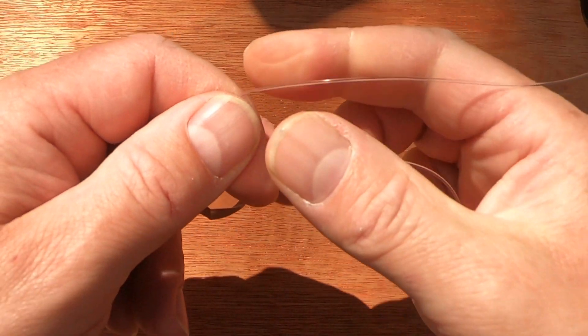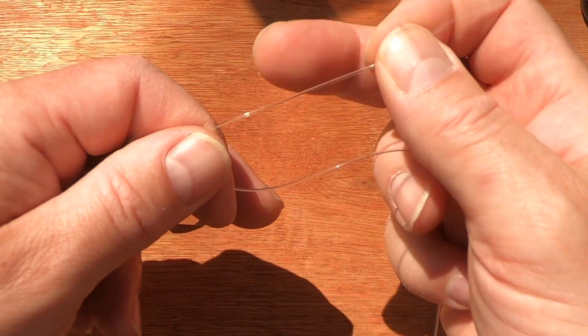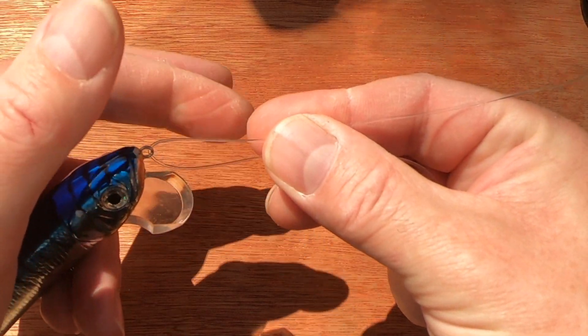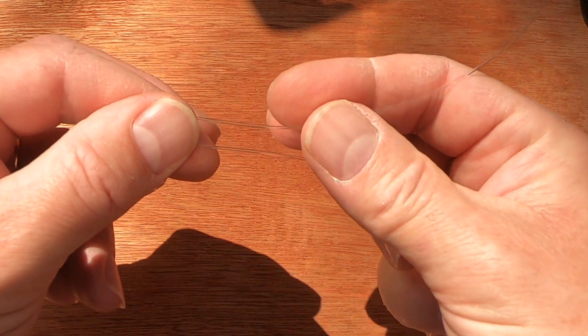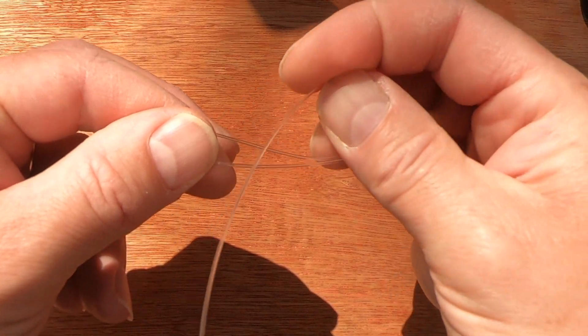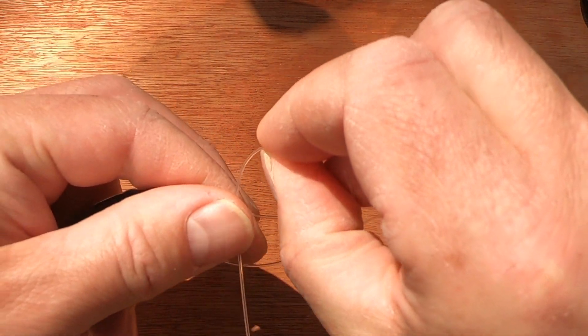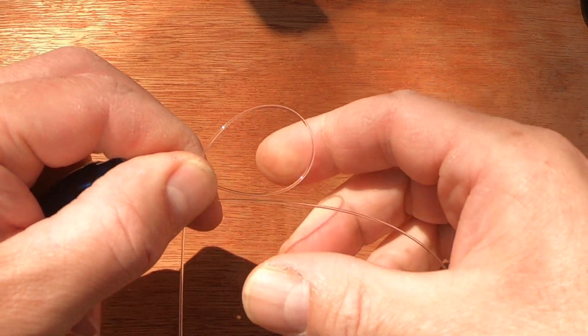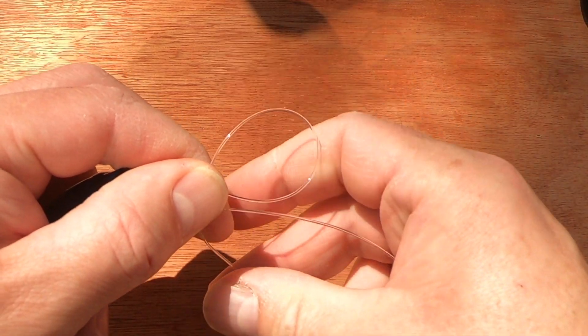So all we do to start off with is we pass the line through the hook or in this case the lure. Pull yourself enough line, I'd say about five inches off, lay it parallel holding it in your finger and thumb with your main line. Double it back over, pinch between your finger and your thumb, and you'll see you've created a loop which runs above and parallel to your main line.